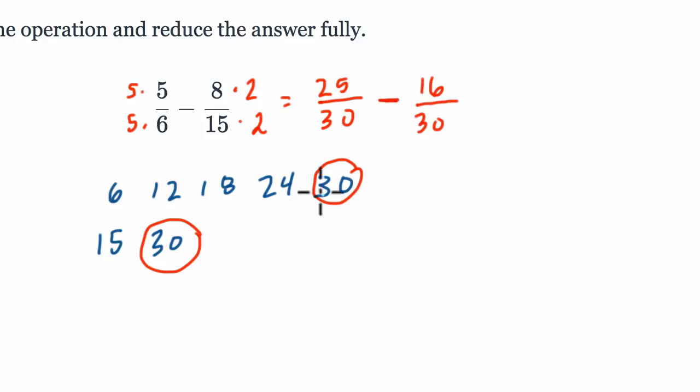So if I subtract these two now, it's easier to do because I have 30ths in both fractions. So when you're at this stage, all you have to do is subtract the top numbers, the numerators.